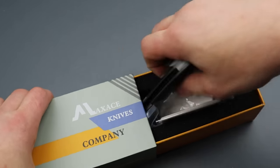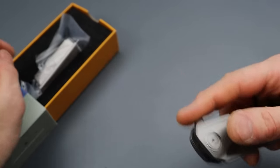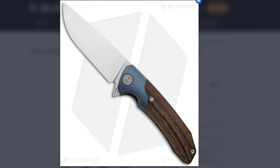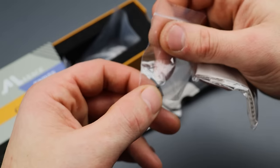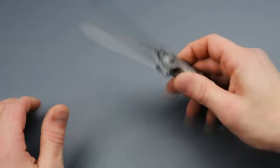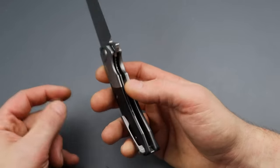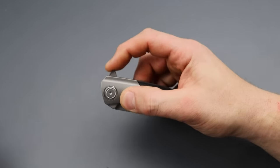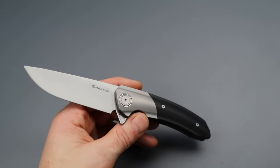Now the Max Ace Mamba reminds me of the Goliath. Just so you know it does come with an extra steel lock bar insert which is pretty cool. So if you ever have problems with lock up or your lock bar moving over too far, you have a new steel lock bar insert.